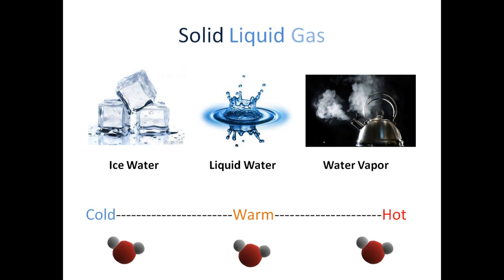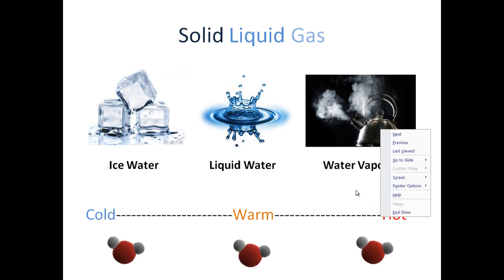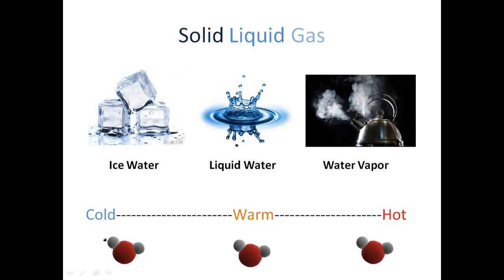When we think about solids, liquids, and gases, an important thing to think about is the temperature of these things. When we look at ice, we intuitively know that it's really cold, and when we think of water vapor, we intuitively know that it's going to be hot. So what does temperature mean in regards to the states of matter?